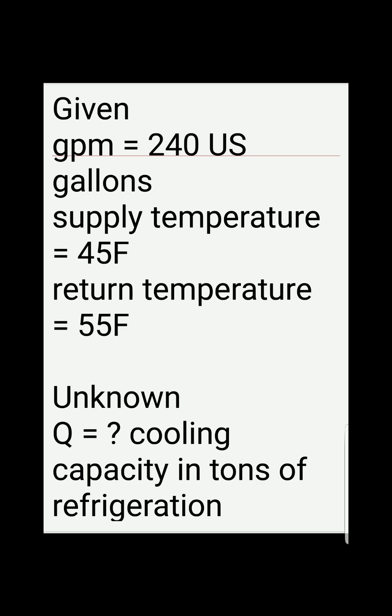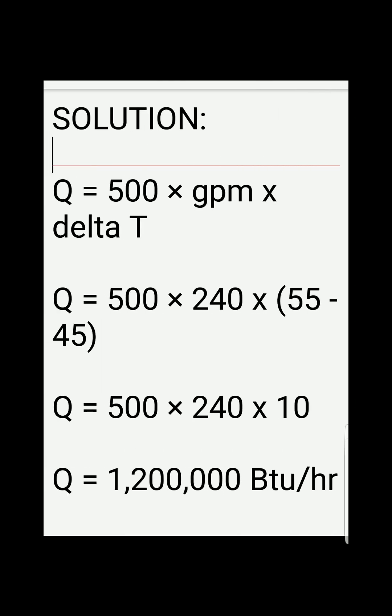The unknown is Q, the cooling capacity in tons of refrigeration. The formula is: Q, or the cooling capacity, is equal to 500 times gallons per minute times delta T.